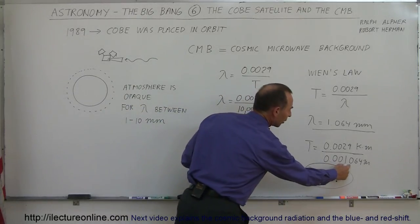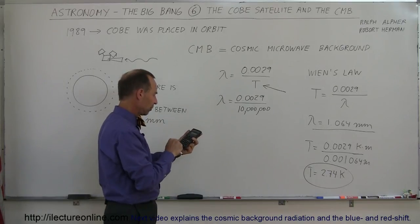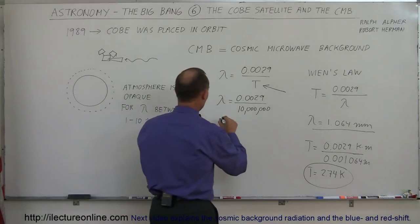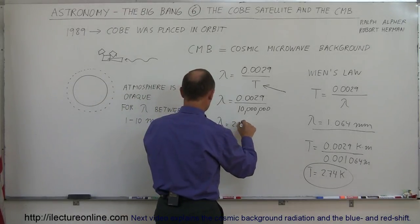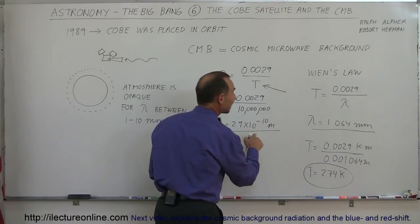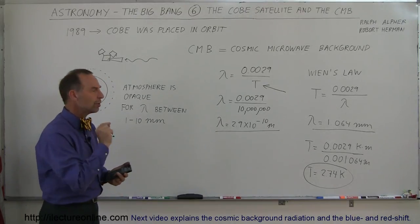So, today, it's 0.001064 meters. What was it then? So, we take this and we go 0.0029 divided by 10 million equals, and we get lambda was equal to 2.9 times 10 to the minus 10 meters, which is less than a nanometer. Wow, that was extremely small.